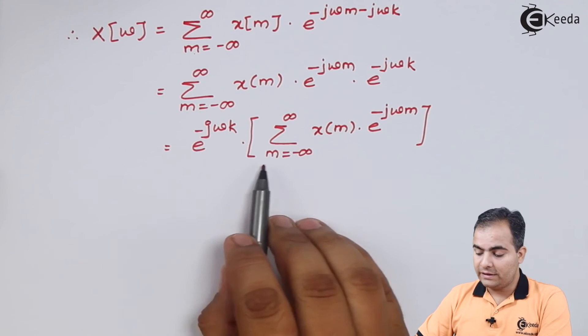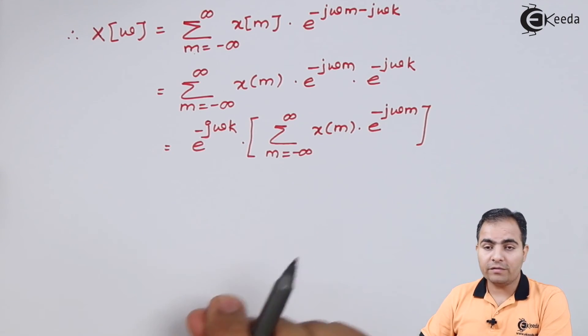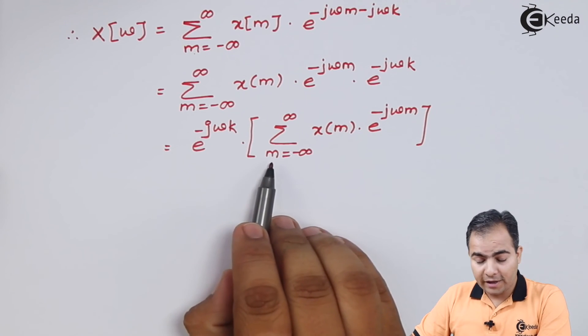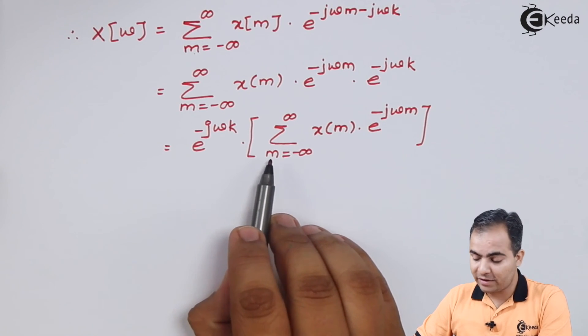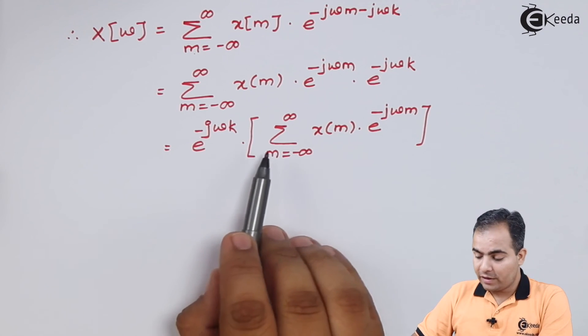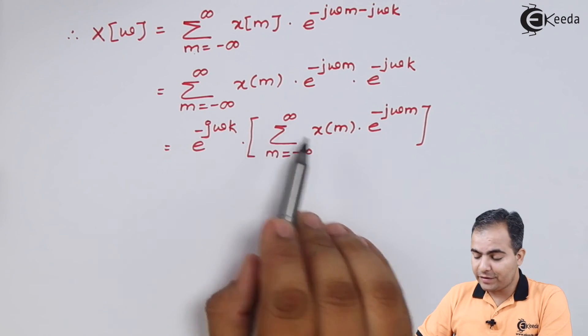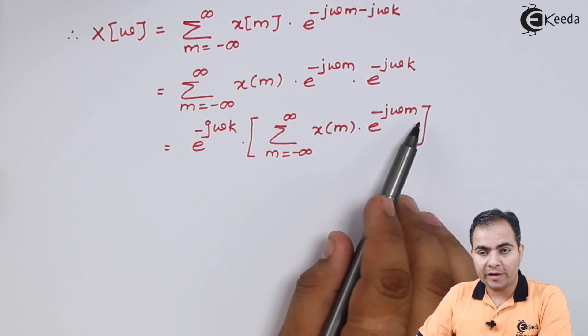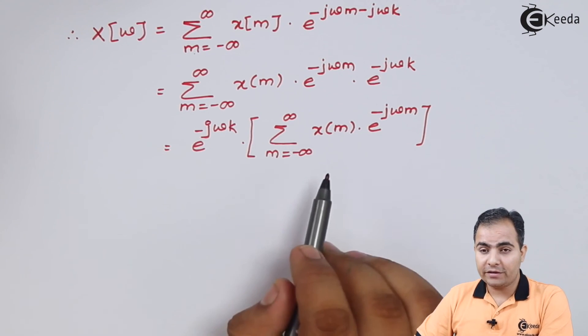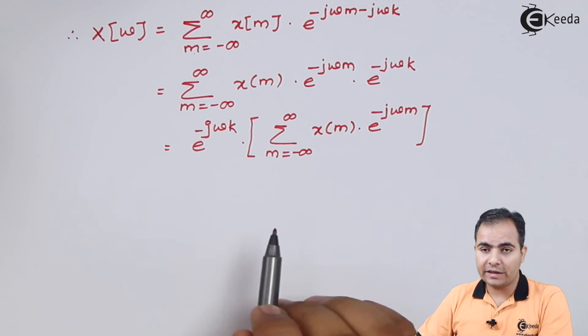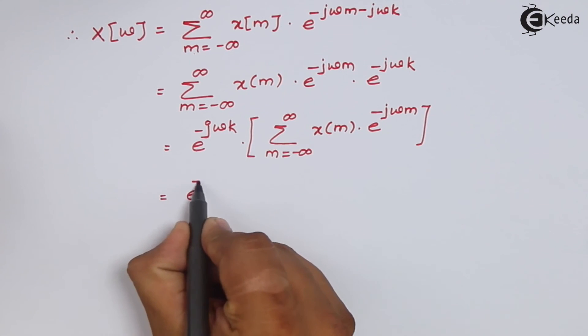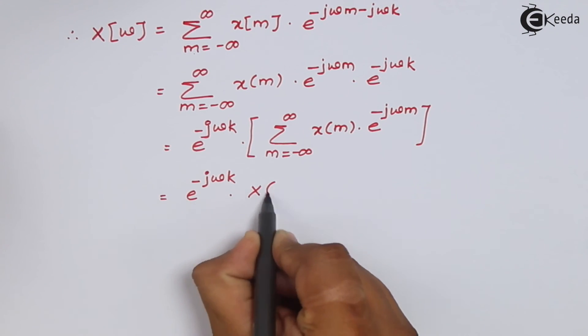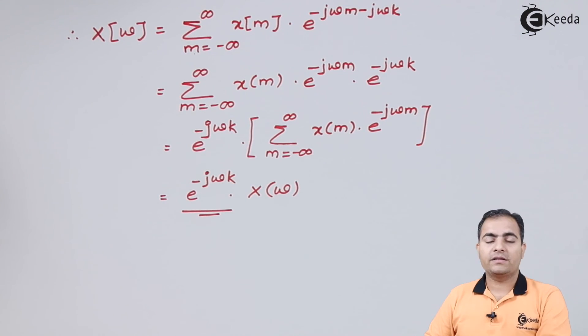And now this whole bracket is in the form of a definition of discrete time Fourier transform, where in my definition we used n as a variable and here we use m as a variable. So look at here: summation, m varies from minus infinity, x[m] e to the power minus jωm. And this is nothing but the definition of discrete time Fourier transform of x[n]. And DTFT of x[n] is represented by X(ω). And this is our proof.